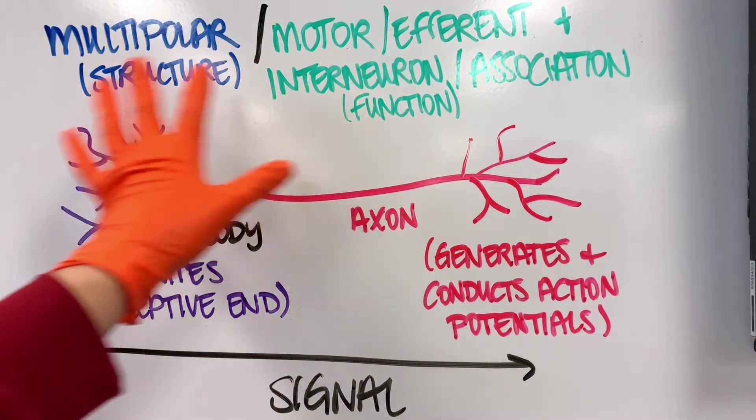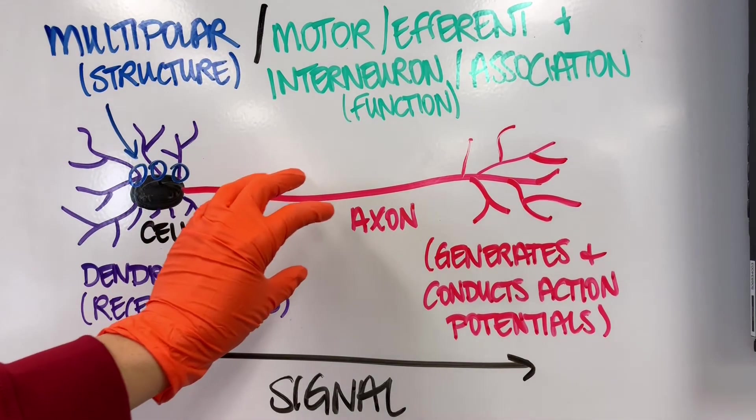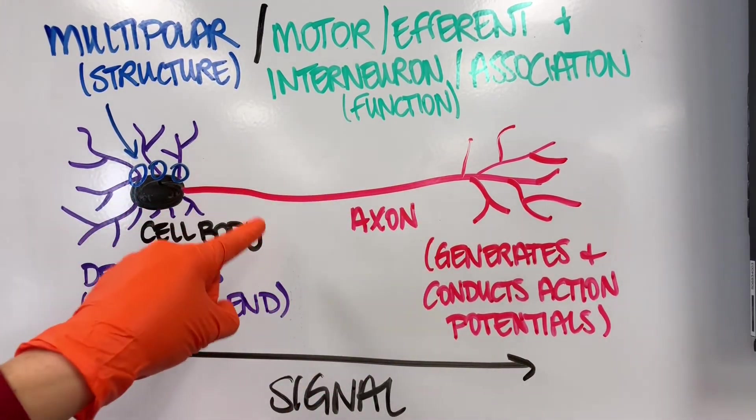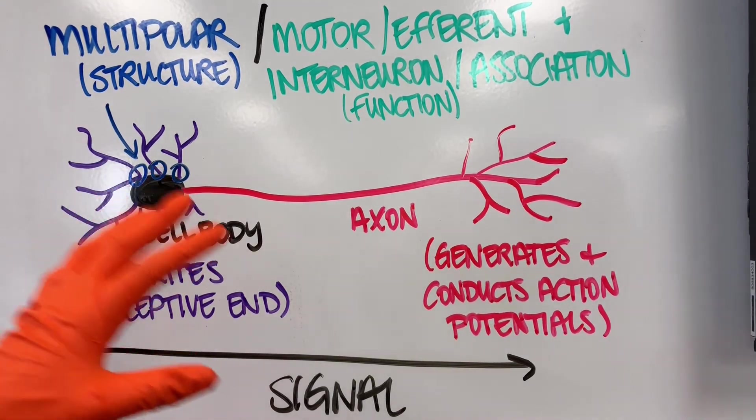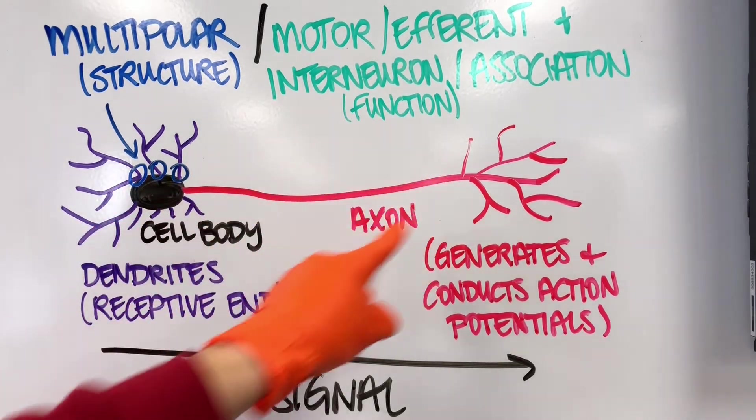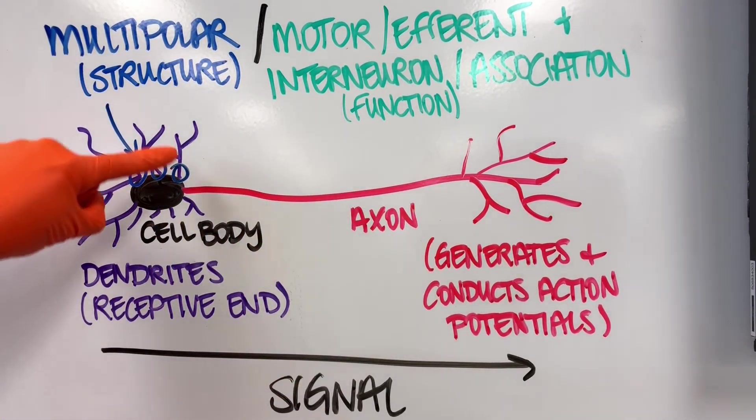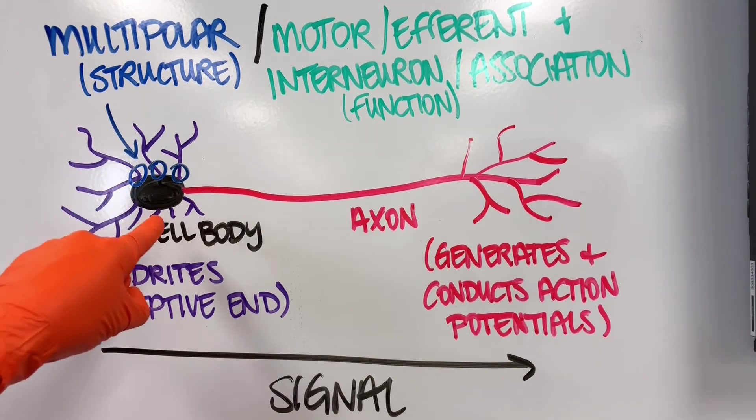Let's remind ourselves of the difference between the terminology here. Both of these terms describe this neuron, but it depends on what we're looking at. If we ask for the structural classification, I think structure reminds us of what it physically looks like. There are multiple processes coming off of that, so the structural classification of this neuron is multipolar.